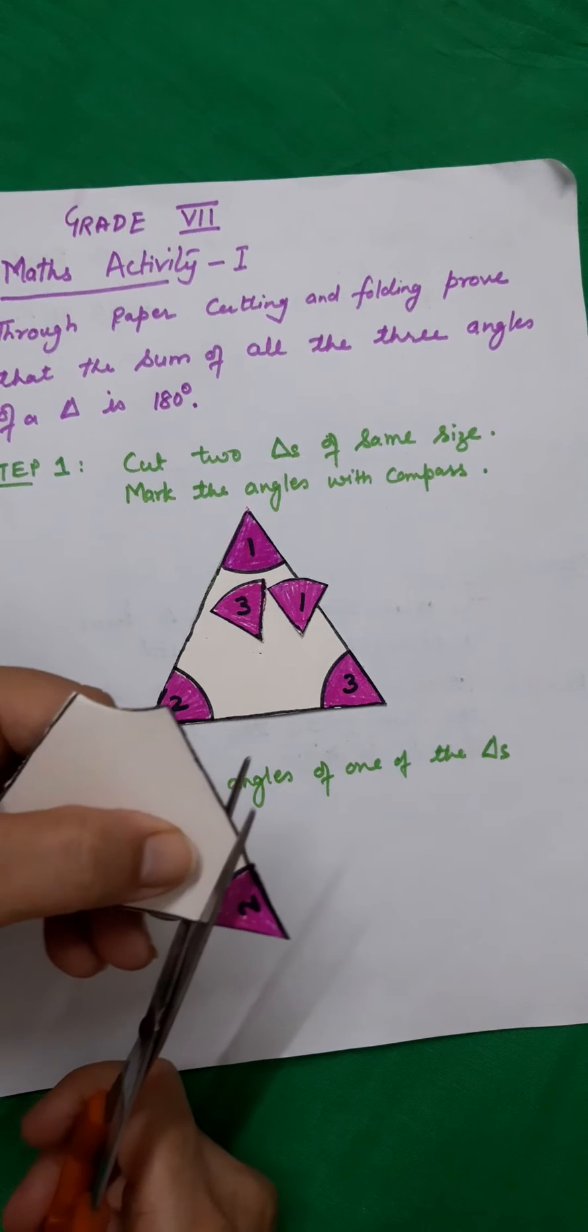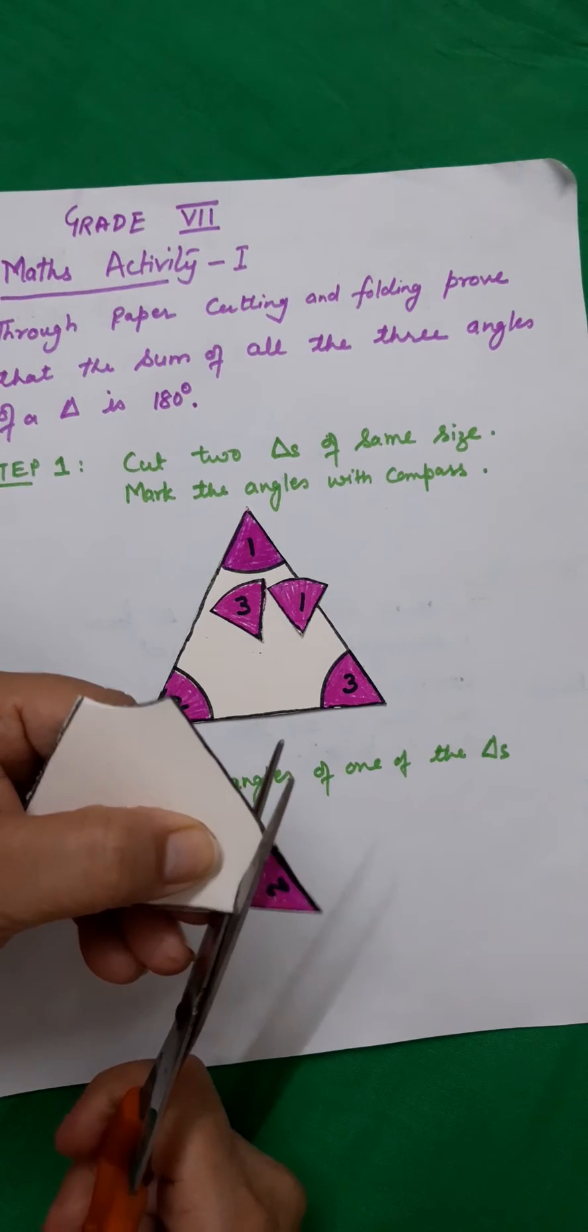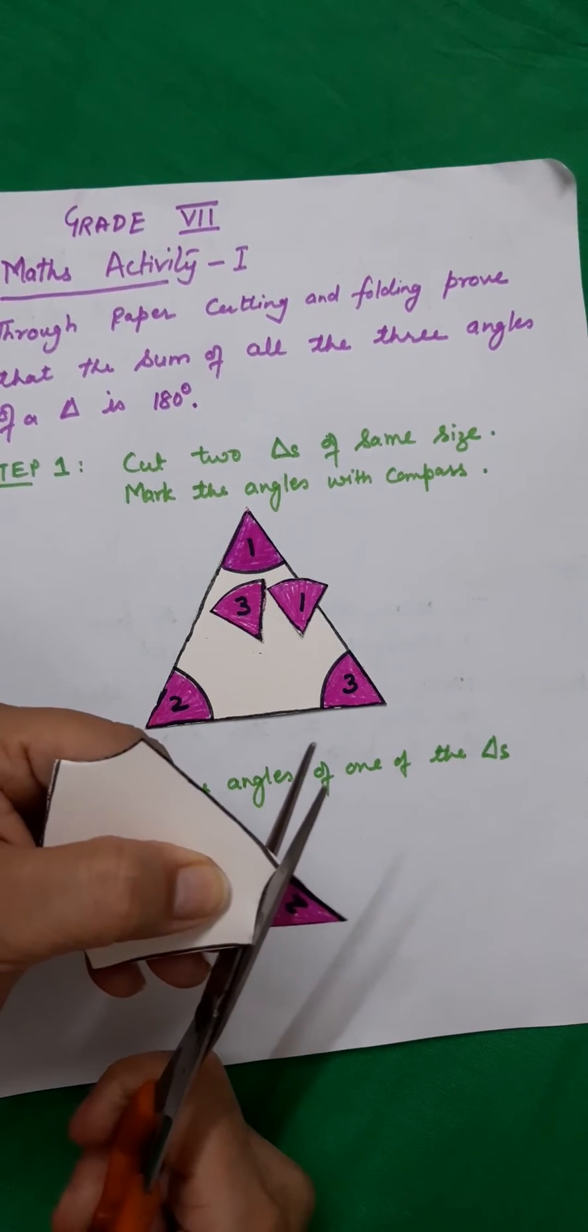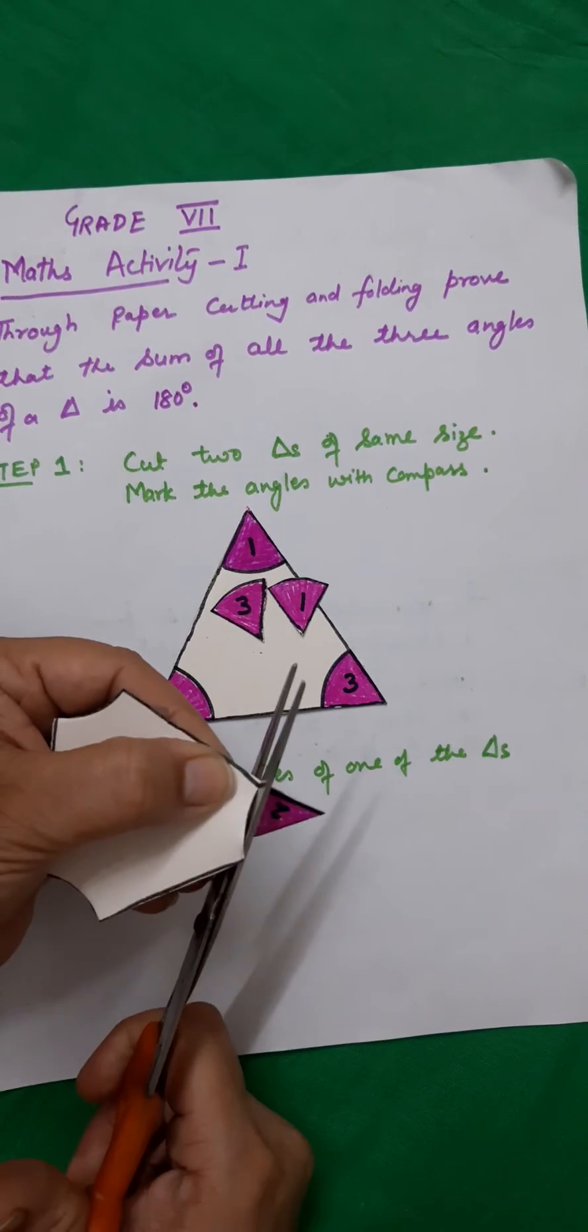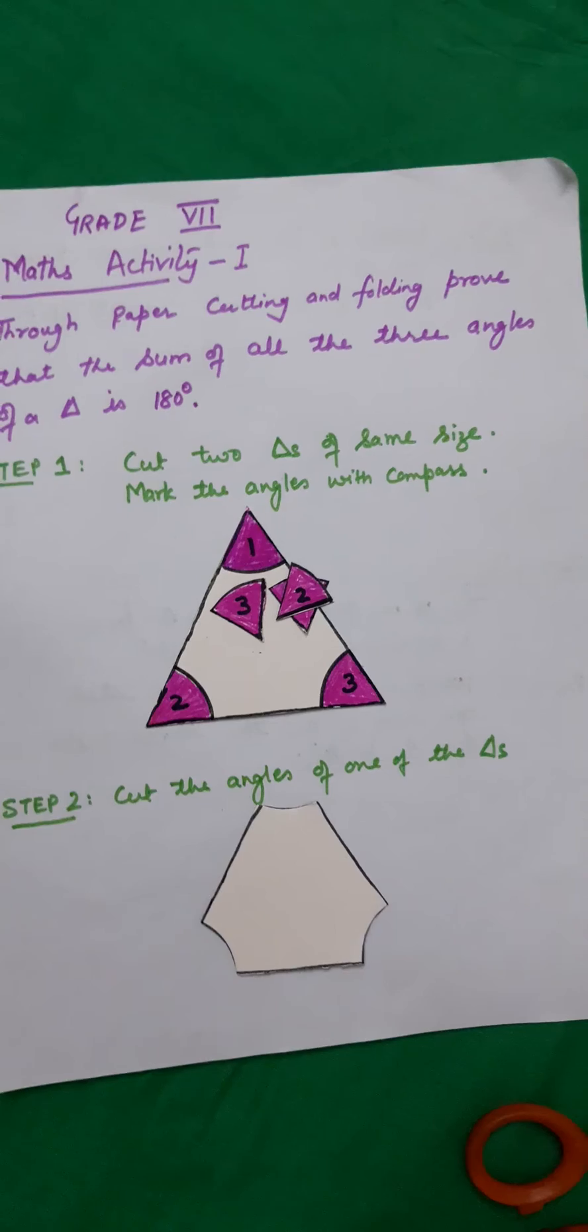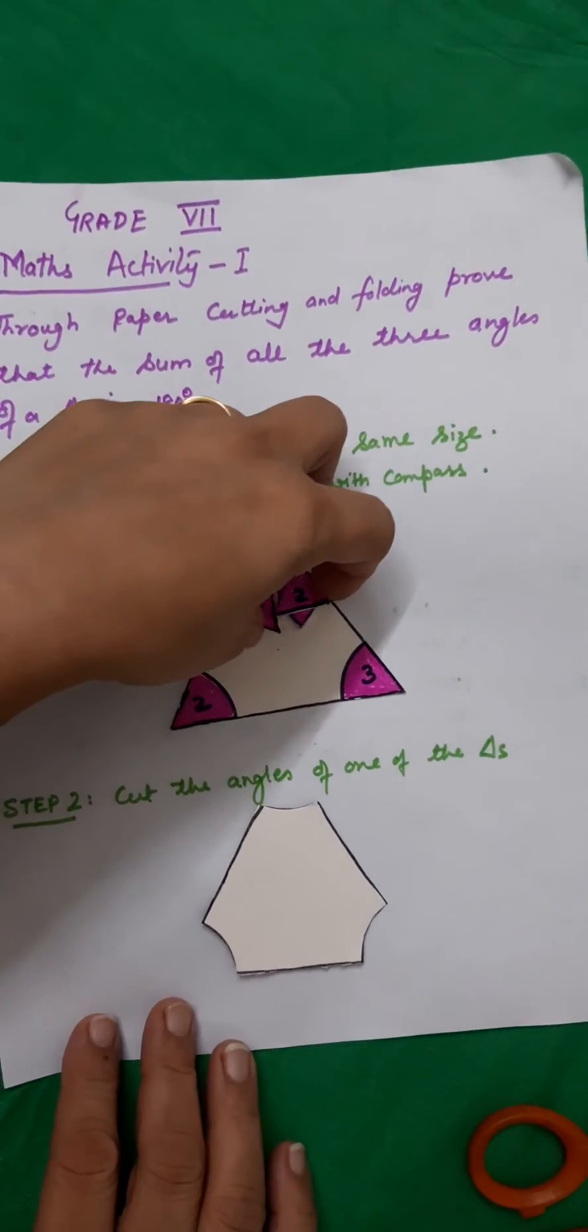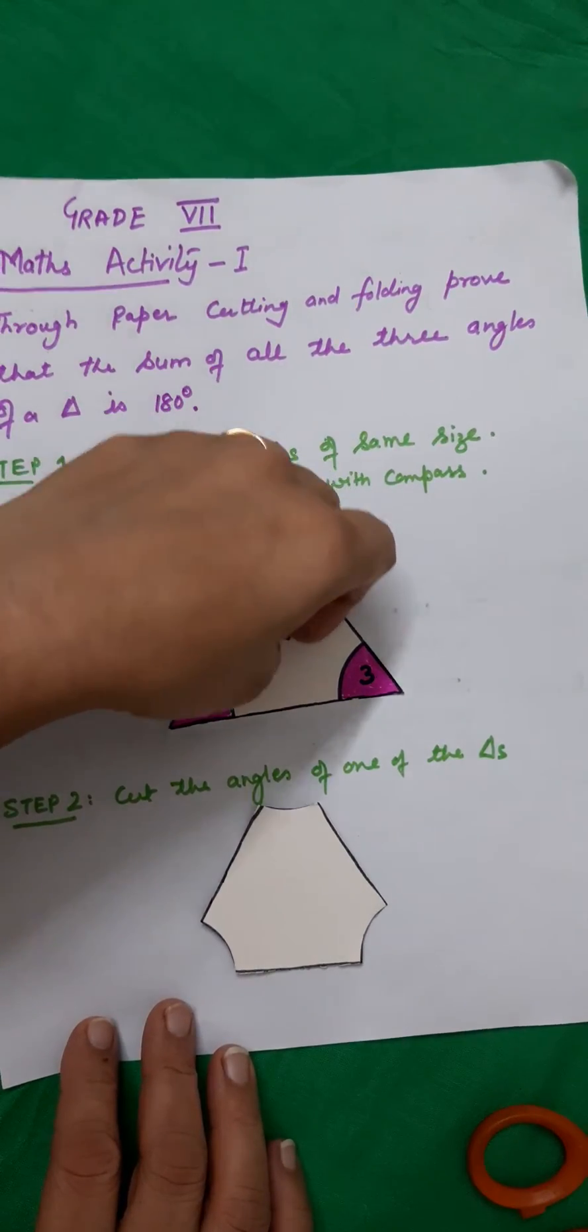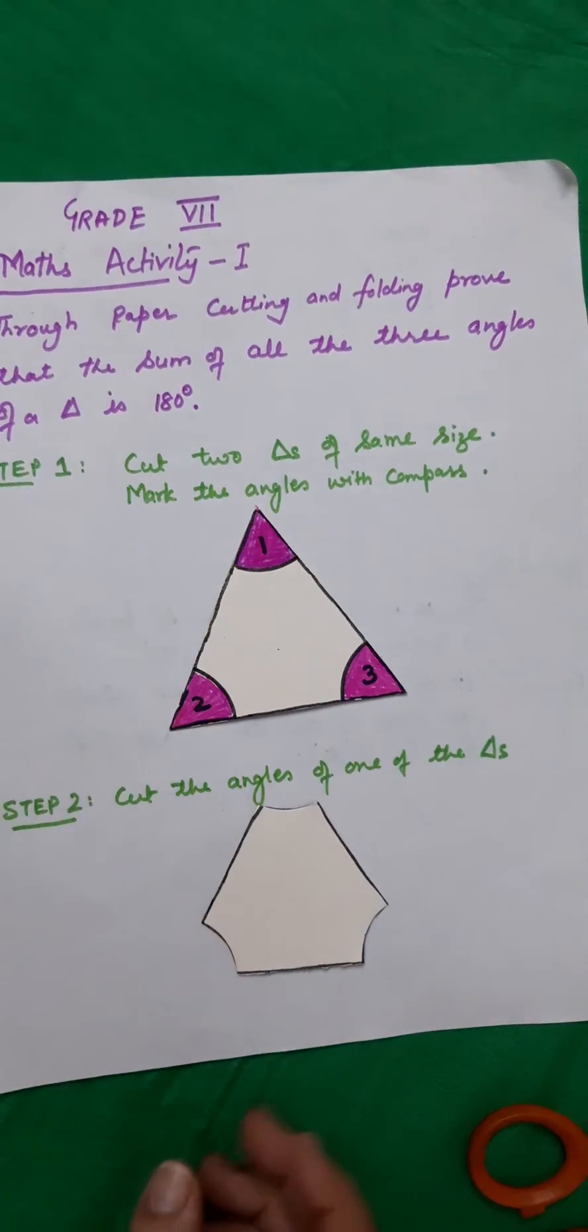Then we have angle number 2. You notice here that I have cut all these angles. Now I have this portion left, but my angles are here. Next step is...